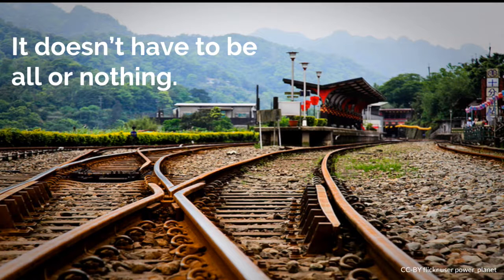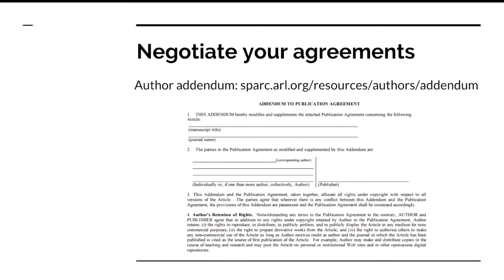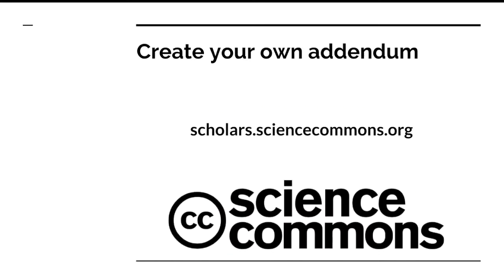Overviewing these publishing agreements may sound bleak, but remember that it doesn't have to be all or nothing with your publication agreements — you can negotiate your agreements. One great resource is the SPARC author addendum, which will help you negotiate more retention of your rights. The link to the author addendum is listed in this slide and within the resources list below the video on YouTube. You can also create your own addendum at scholars.sciencecommons.org. This resource can be used by all research disciplines to develop an author addendum specific to what rights you want to retain.